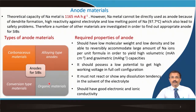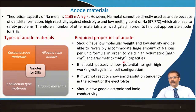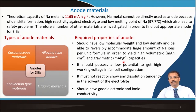The required properties of anode materials include low molecular weight and low density, and the ability to reversibly accommodate a large amount of sodium ions per formula unit to yield high volumetric and gravimetric capacity. The material should possess a low potential to achieve a high working voltage. Graphite, for example, works around 0.2 to 0.5 volt versus the lithium+/lithium redox couple.